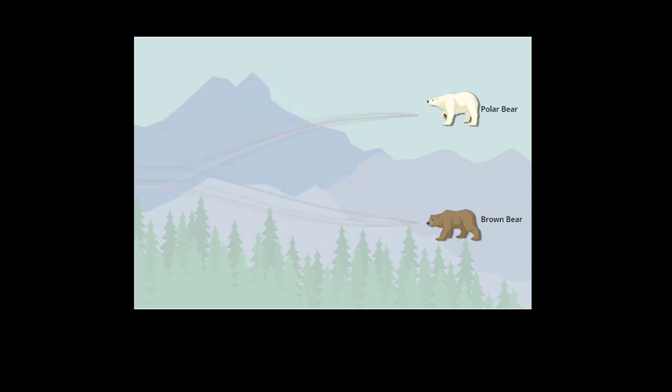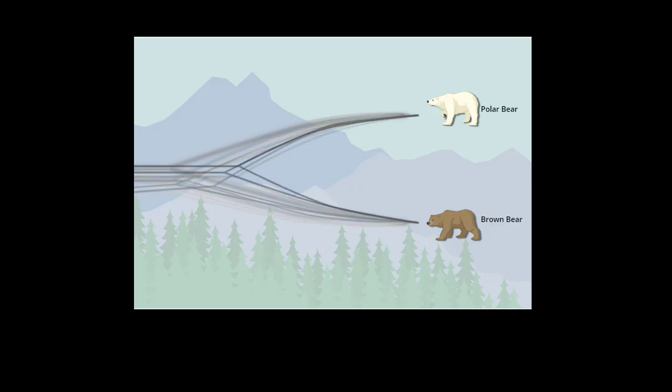By collecting this information for many genes, scientists can build a composite diagram made up of many gene trees. This type of tree is called a cloudogram. Because it contains so much more information than a single gene tree, a cloudogram more accurately shows the timing of a species split, while also emphasizing the uncertainty in any particular timing estimate.